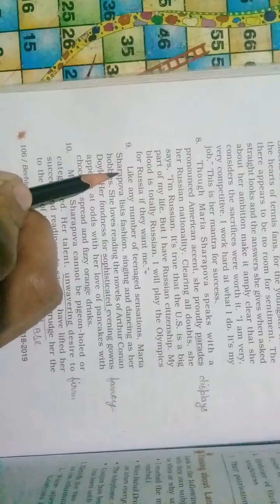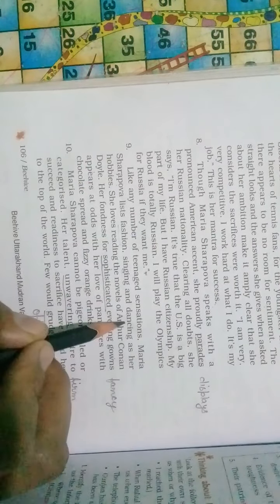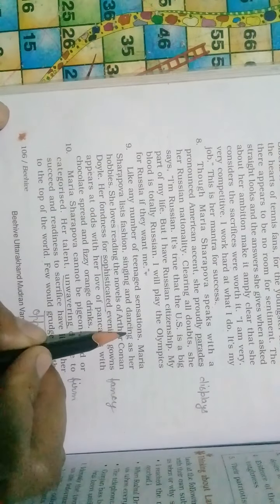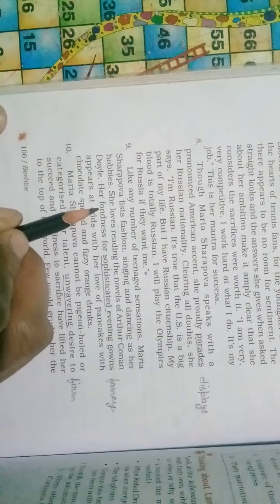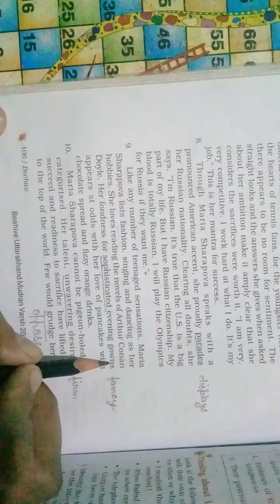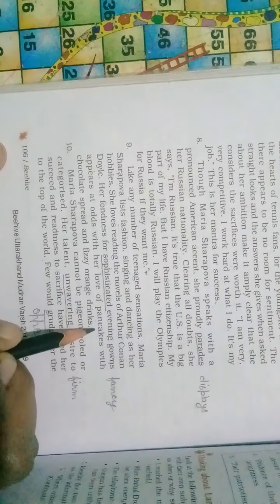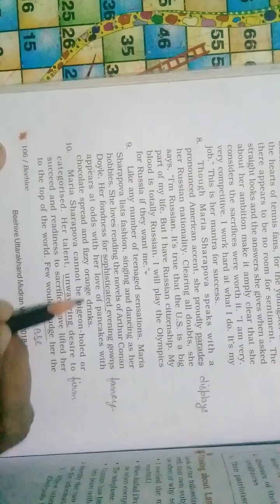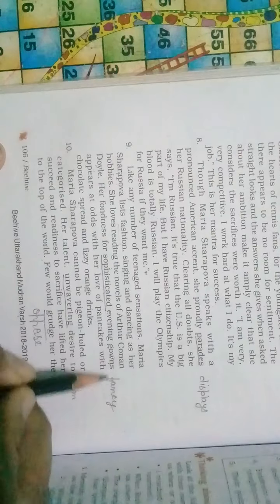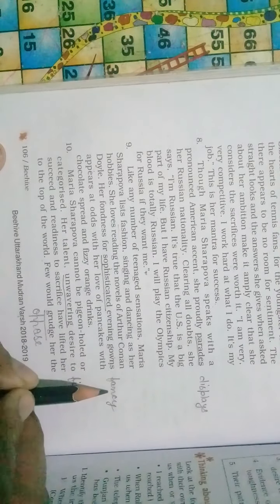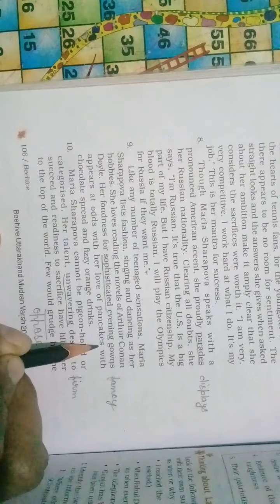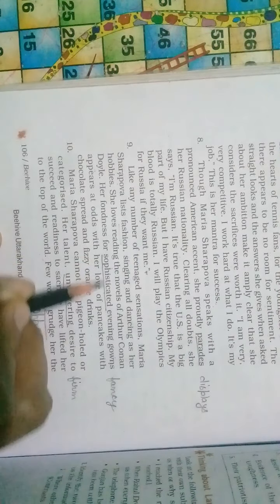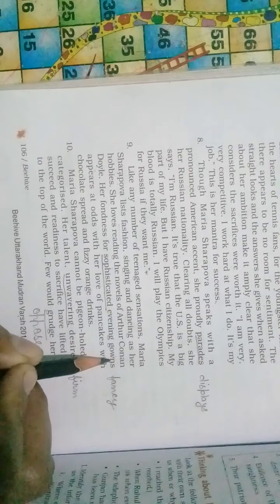Like any other teenager, Maria Sharapova has some hobbies like fashion, singing, and dancing. These are her hobbies. She loves reading novels of Arthur Conan Doyle. She is very fond of fancy evening gowns. She is fond of pancakes with chocolate spread and fizzy orange drinks, which seems odd to her fancy evening gowns hobby because the food she loves is high calorie, and for wearing fancy gowns, she will have to look slim.